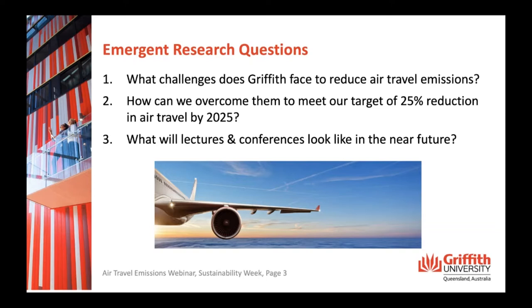The challenges Griffith faces to reduce air travel emissions are basically that international travel is core to our business — international students, staff, research links, conferences, and other research visits. To overcome them and meet our target of a 25% reduction in air travel by 2025, there are a number of ways I'll outline through the decision-making process: carbon calculation, more online conferences and guest lectures. Many of us have already gone to online conferences — it's a very different environment. I'm in N78 on Nathan Campus, used to being here for large seminars, but today it's basically just me and a couple of tech people, which is very strange without that audience interaction.